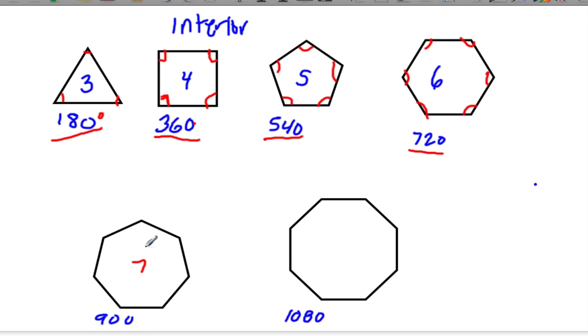A seven-sided shape, a septagon, which has one, two, three, four, five, six, seven interior angles, add up to 900 degrees every time.